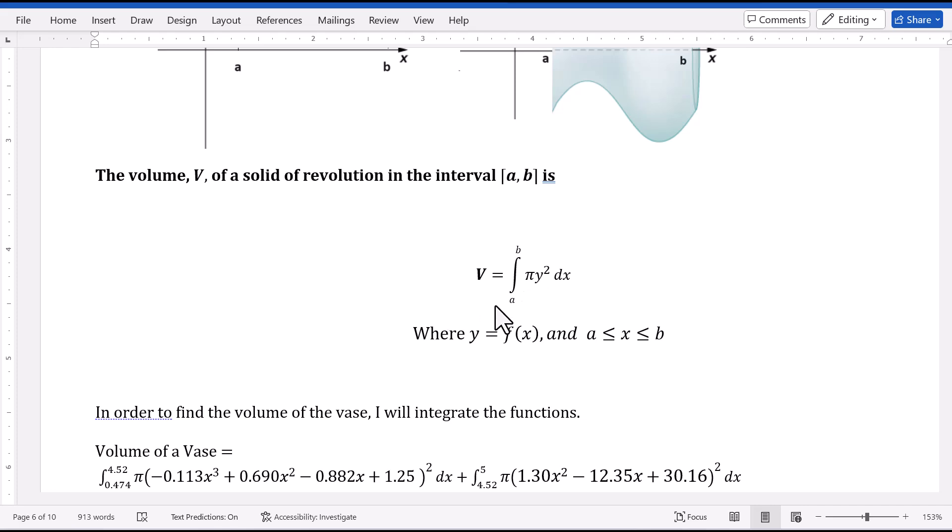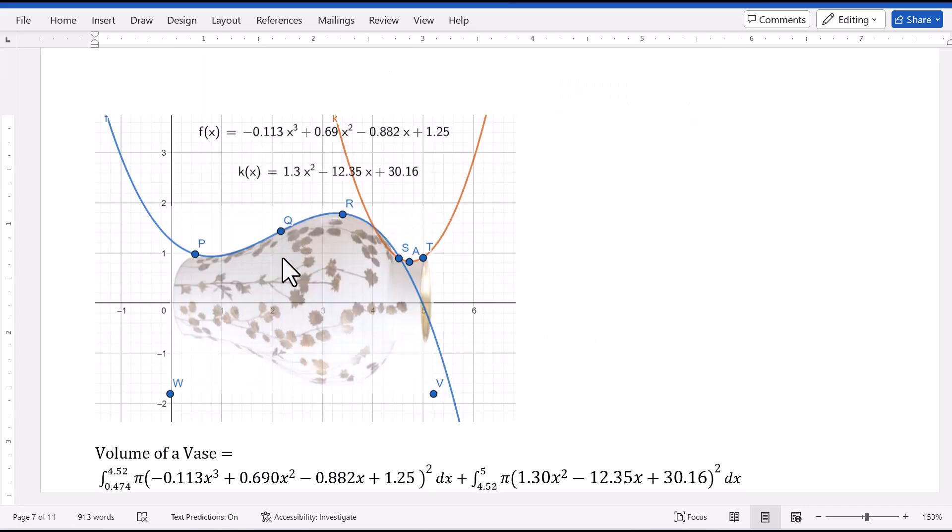We will use this formula to figure out the volume of the vase. Since we already figured out a few functions to model the upper boundary of this vase, we will substitute these two functions for y. I will show you how to use a graphing calculator to get the solution.